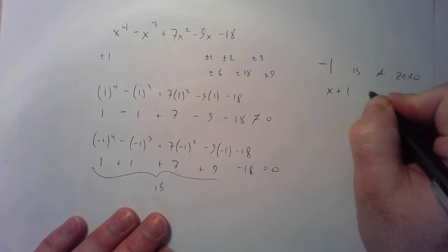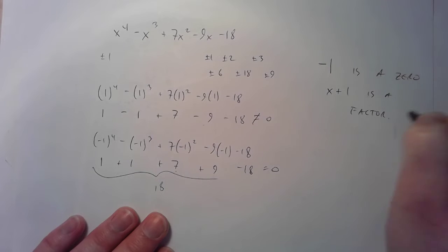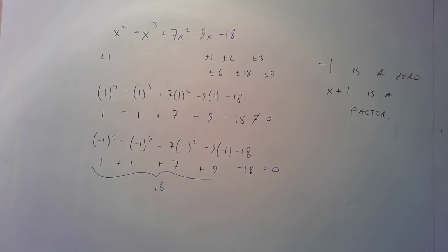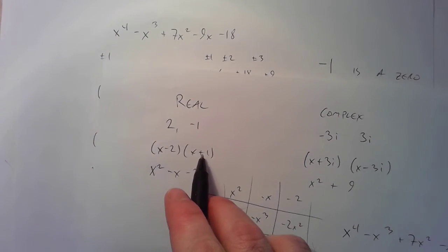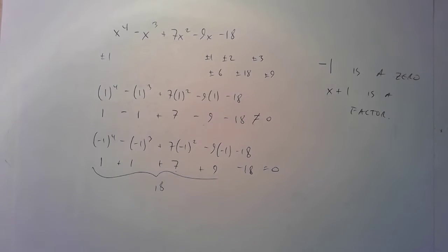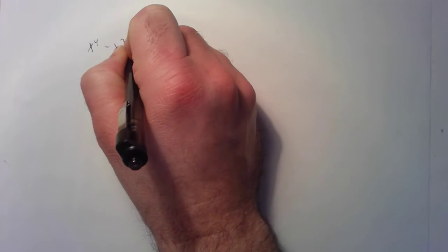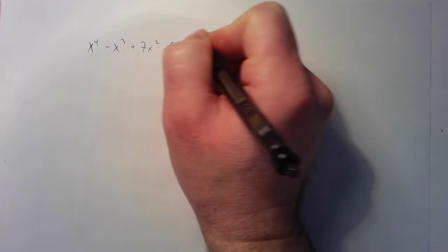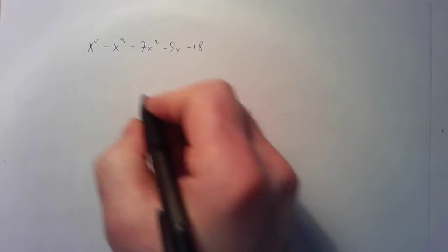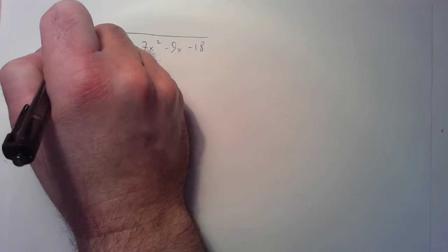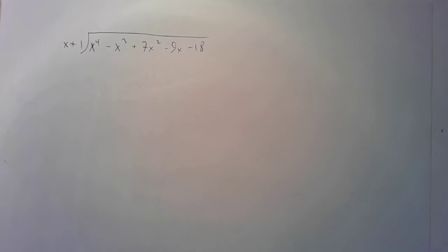Therefore x plus 1 is a factor. Just looking at how I made the problem, I already knew x plus 1 was going to be a factor, but this is how you find it when solving. Knowing that x plus 1 is a factor, I can start a new page and do some polynomial division — dividing x to the fourth minus x cubed plus 7x squared minus 9x minus 18 by x plus 1.